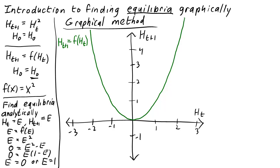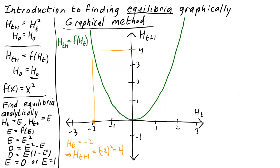The graph of f represents the evolution rule of our dynamical system. If we know the value of h at any time step t, we can use the graph of f to look up the value of h at the next time step, h_{t+1}. We just start with the value of h_t on the horizontal axis and move up or down to the graph of f. The height of the resulting point gives us h_{t+1}. For example, if h_t = -2, then we move up to the graph and find that f is at height 4, so h_{t+1} = 4. That makes sense — the square of -2 is 4.